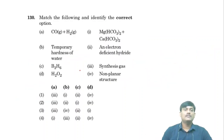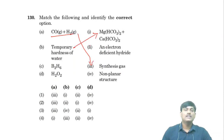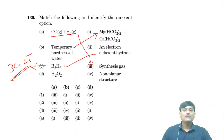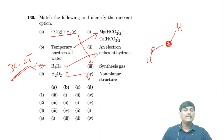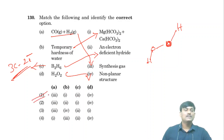Match the following: CO + H₂ is synthesis gas. Temporary hardness of water is due to calcium and magnesium bicarbonates. B₂H₆ contains three-center two-electron bonds — it is an electron-deficient hydride. H₂O₂ has a non-planar, open-book structure. Matching gives A-3, B-1, C-2, D-4. The first option is correct.